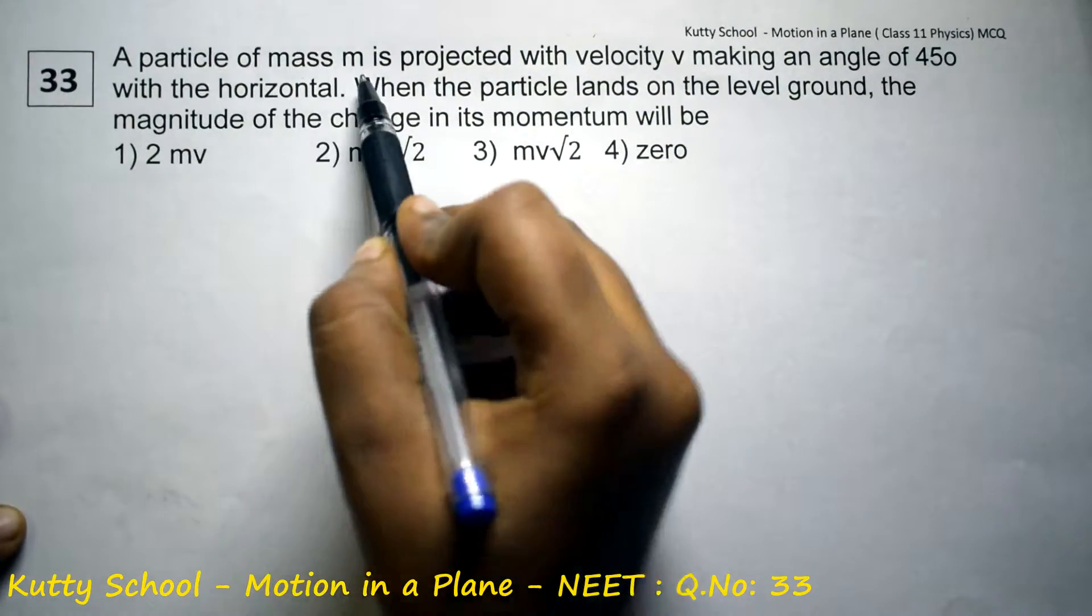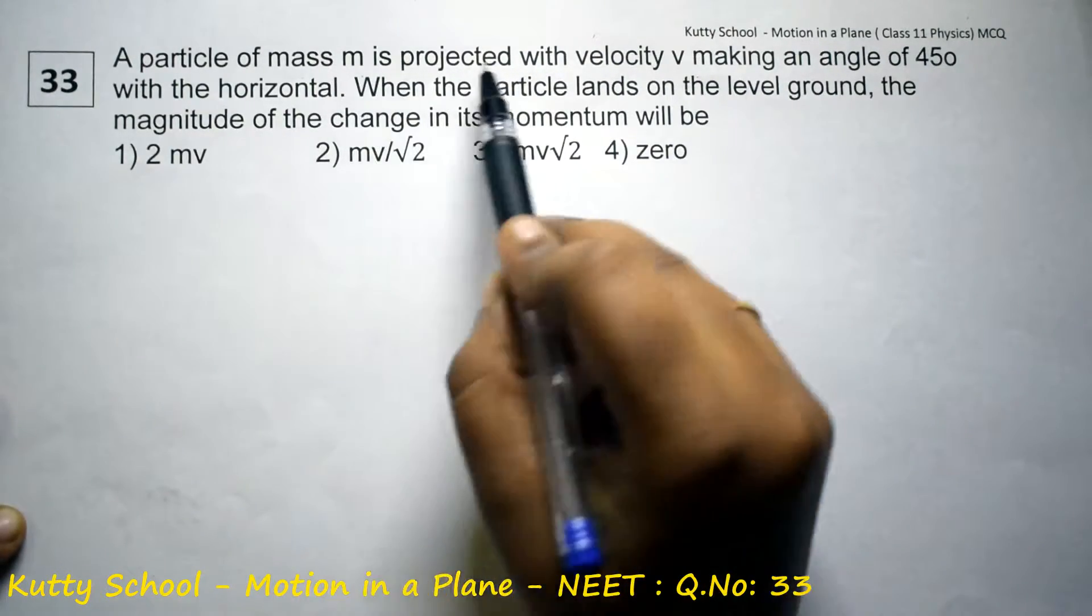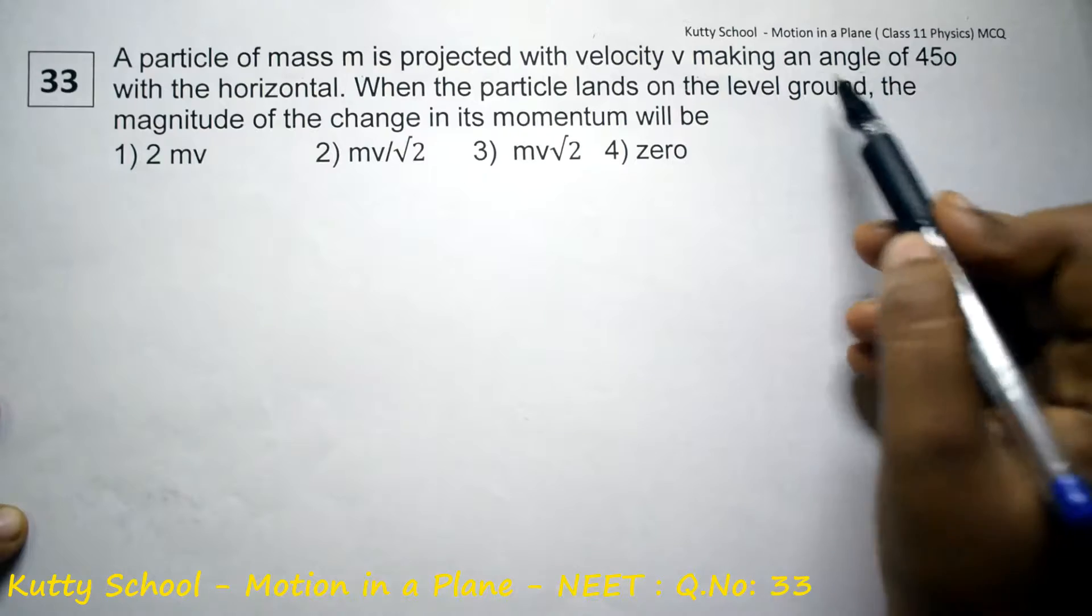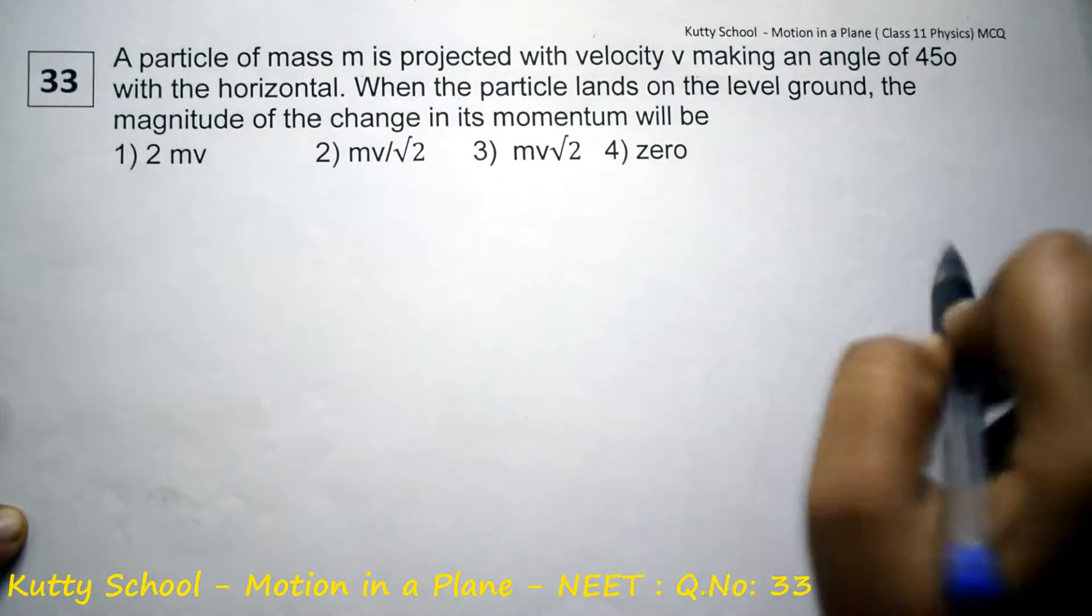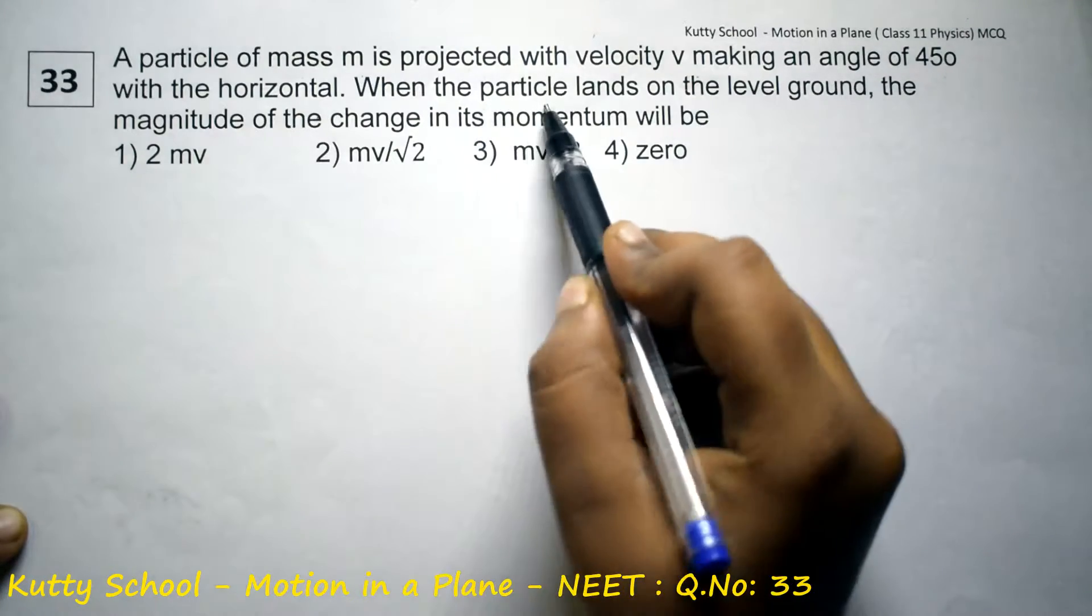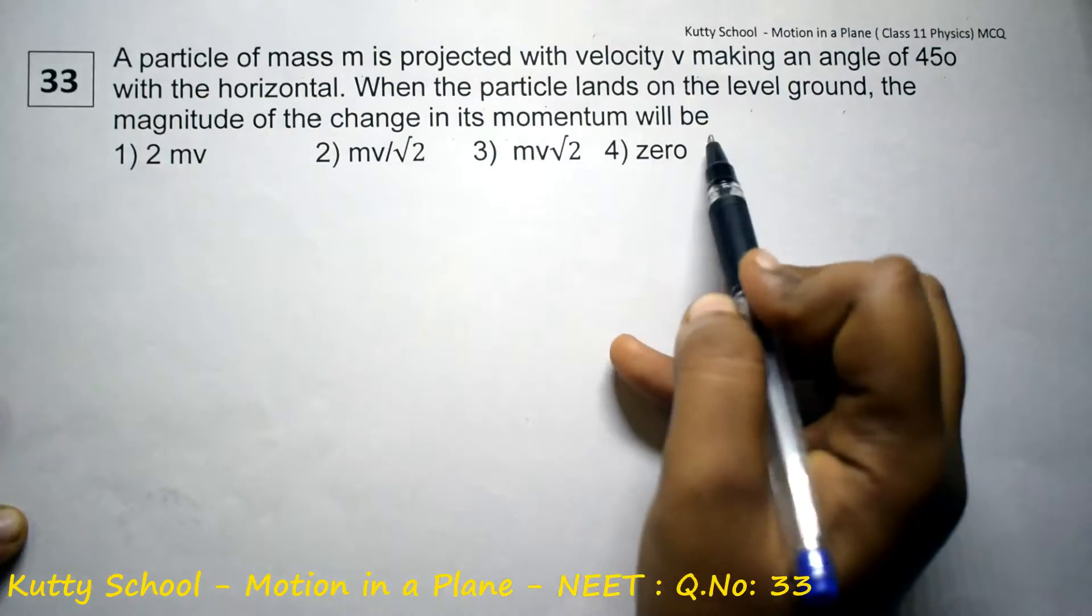A particle of mass m is projected with velocity v making an angle 45 degrees with the horizontal. When the particle lands on the level ground, the magnitude of change in its momentum will be?